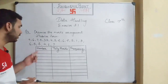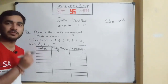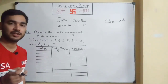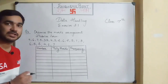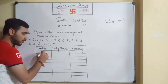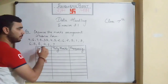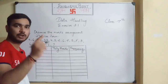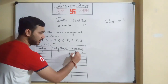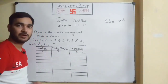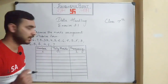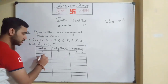The first column will be for the number, the second for tally marks, and the third for frequency. Frequency means how many times a number is occurring. The numbers start from one. One is occurring only one time, so we write one in the tally column and one in the frequency column.